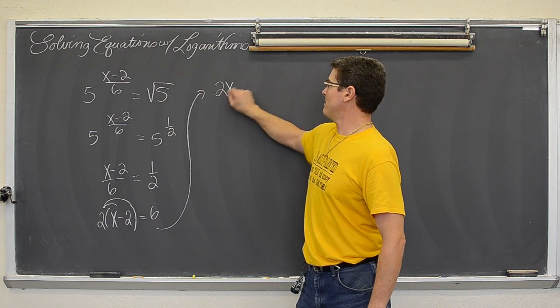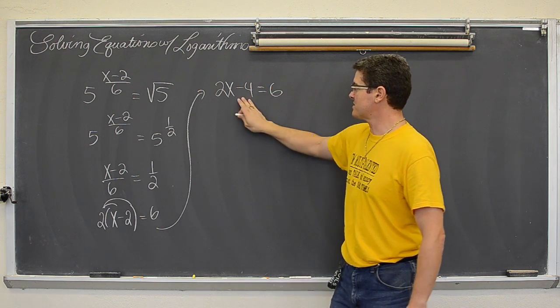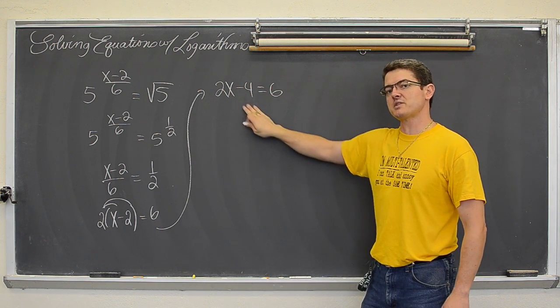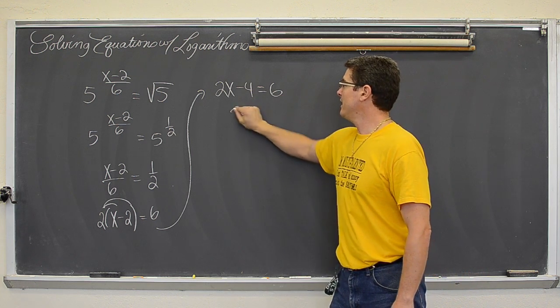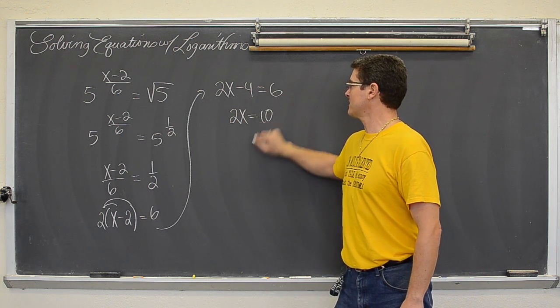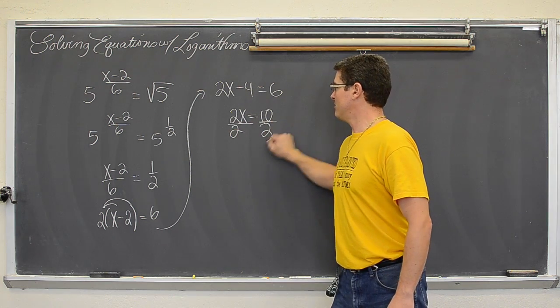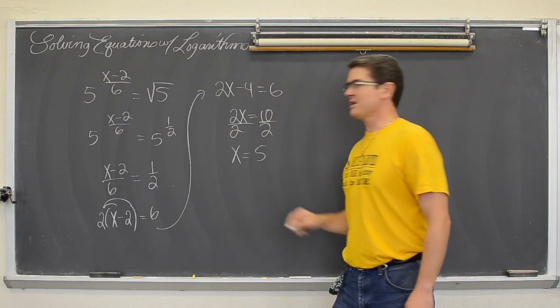And we get 2x - 4 equals 6, bring the 4 over to the other side of the equation by doing the opposite, so I am going to add both sides by 4, and get 2x equals 10, and then divide everything by 2, and x equals 5.